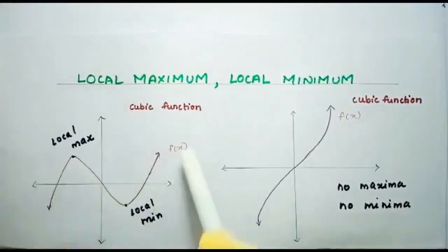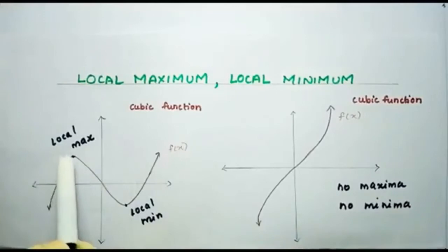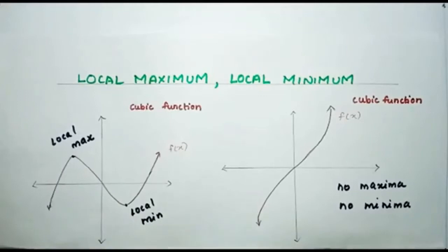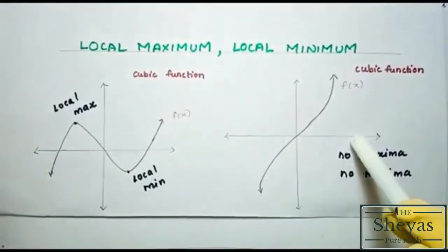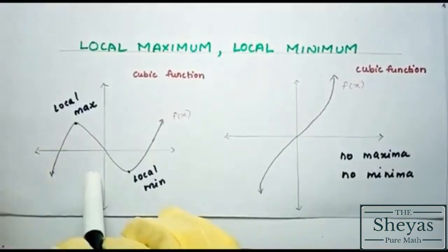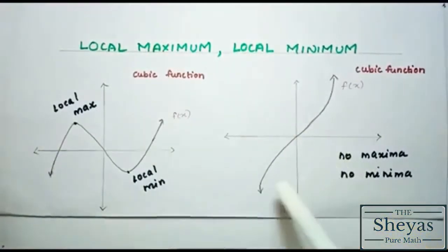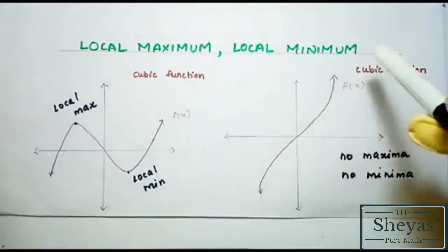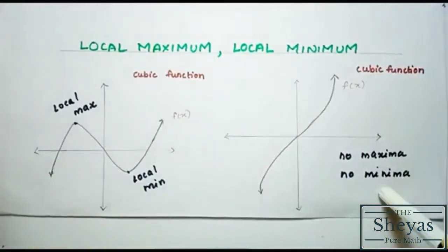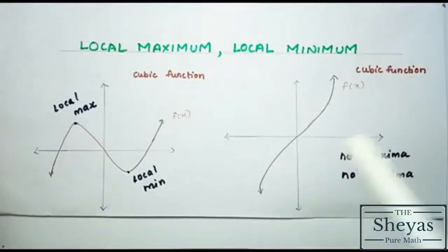Once again I repeat: in this graph, this is the local maximum point and this is the local minimum point. Both are examples of a cubic function. This cubic function has local maxima and local minima. But this other cubic function has no maxima and no minima — it's constantly increasing from minus infinity to positive infinity.